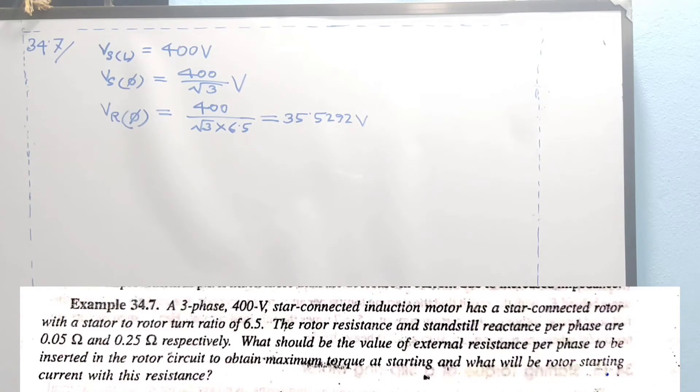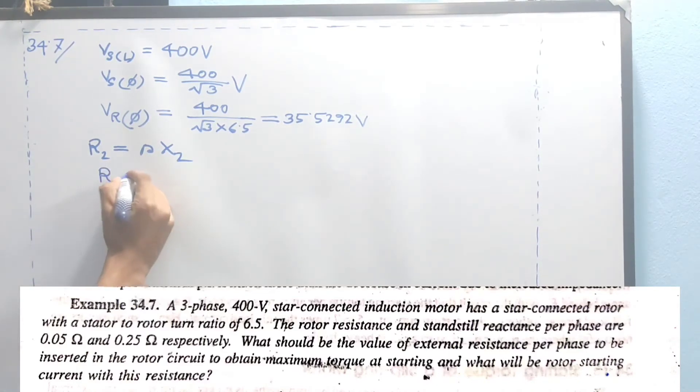Using the Thevenin equation for maximum torque - the condition for maximum torque is R2 equal to S times X2. R2 is the standstill rotor resistance. At starting condition, slip S equals 1, so for maximum torque at starting, R2 equal to X2.